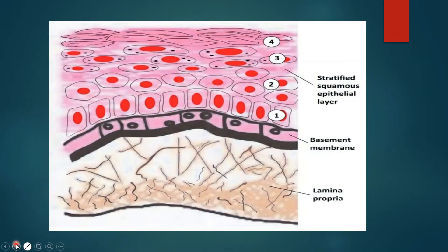Next is stratified epithelium. The word 'strata' itself means layer. This is the stratified epithelium — here is the basement membrane, and above it there are different layers of cells, which is why it is called stratified epithelium. Below the basement membrane is the lamina propria. So stratified epithelium means layers one above the other.